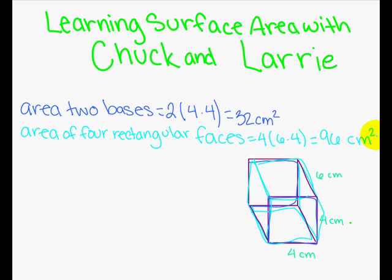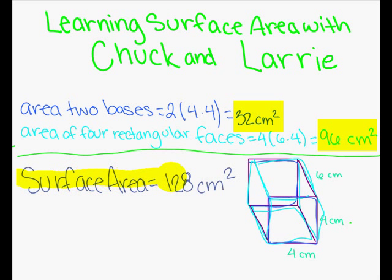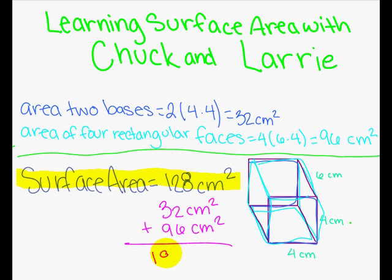Since that's all your dimensions, then you would add them up. So your surface area is 128 centimeters squared. How did you get 128? I got 128 by adding up 32 centimeters squared plus 96 centimeters squared, and when you add that up, your total is 128 centimeters squared.